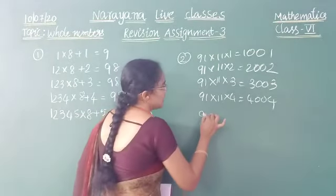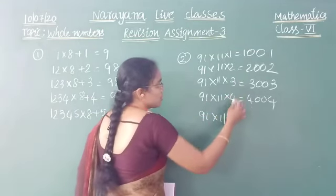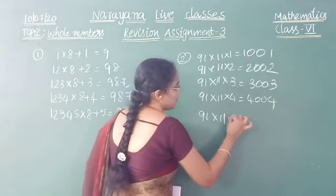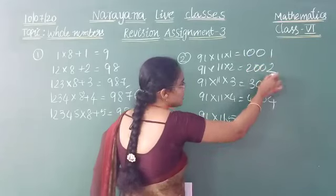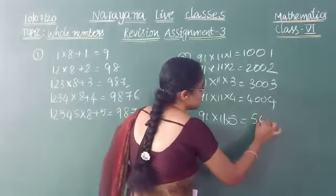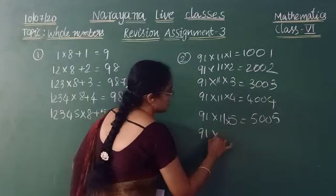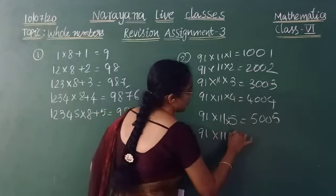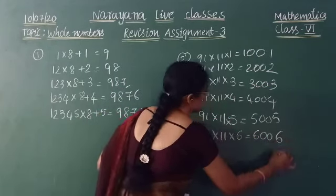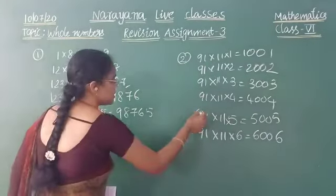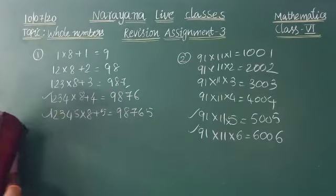The next 2 steps: 91 × 11 × 5 = 5005, following the sequence 1001, 2002, 3003, 4004 — so the next is 5005. And 91 × 11 × 6 = 6006. These are the next 2 steps for this question.